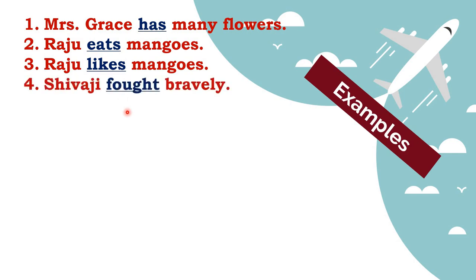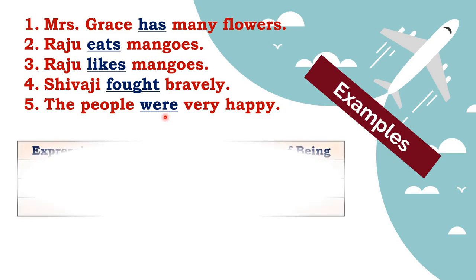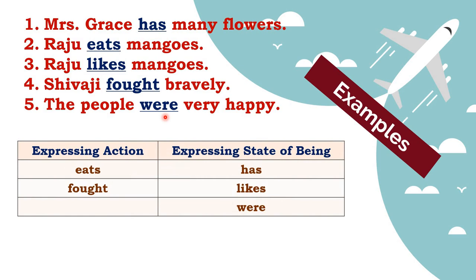'Shivaji fought bravely' - here he is fighting, so there is an action being performed: 'fought.' Fifth sentence: 'The people were very happy' - they were not performing any action, but they were very happy. Looking at the table: 'eats' and 'fought' express action, while 'has,' 'likes,' and 'were' express state of being. In any case, they are all verbs.